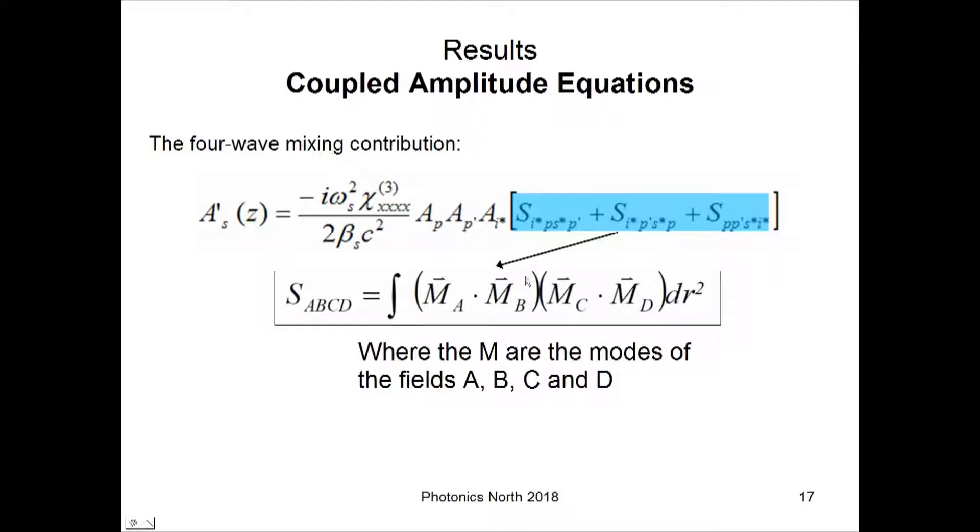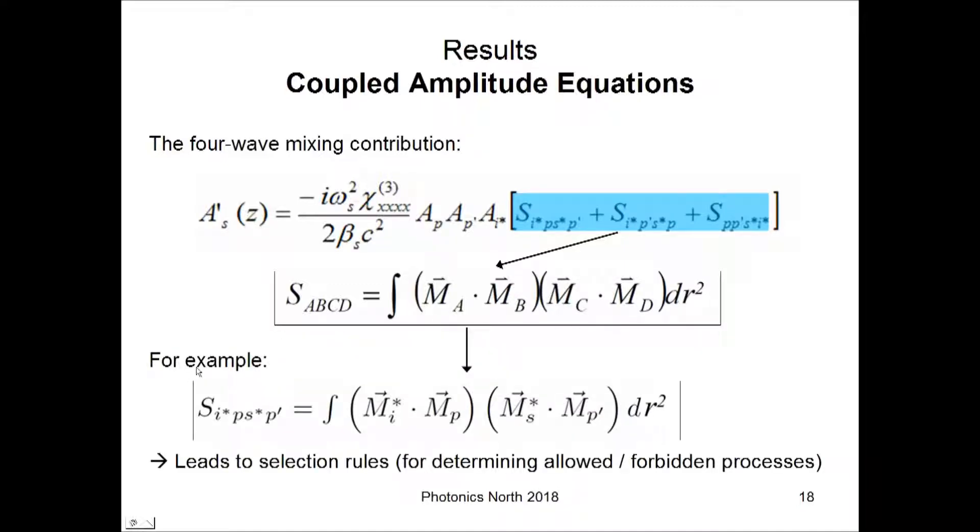As an example, for the first term, there are some conjugates applied to the subscripts. And that just means that these conjugates are to be applied to the fields themselves. So, each of the respective m's. So, as an example, here is the first of the three S terms. And this is what that looks like. And after evaluating all three of these, that leads to the selection rules for determining allowed and forbidden processes.